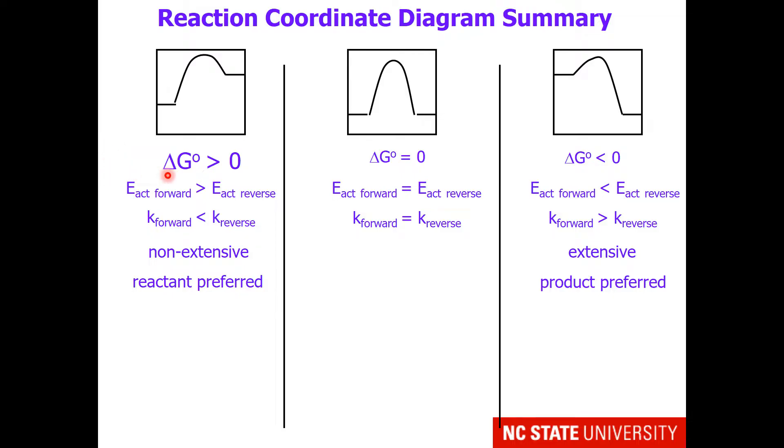For your series of questions, you were given a diagram in which delta G° is greater than zero. In this diagram, energy of activation forward is greater than energy of activation reverse and rate constant forward is less than rate constant reverse. Because delta G° is positive, we say this reaction is non-extensive and prefers to remain on the reactant side, which is the low energy side of this diagram.